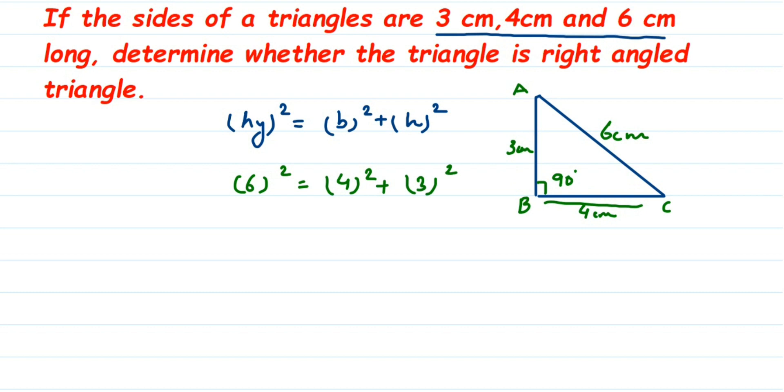6 square is 36. 6 times 6 is 36. 36 is equal to 4 square is 16 plus 3 square is 9. Now, add 16 and 9, we will get 25 and here we are getting 36.